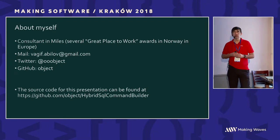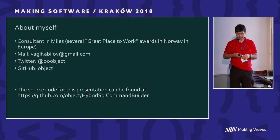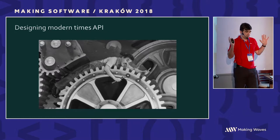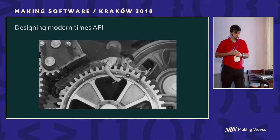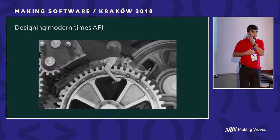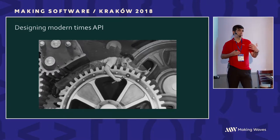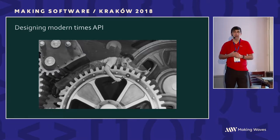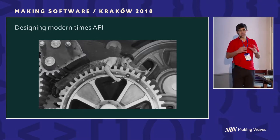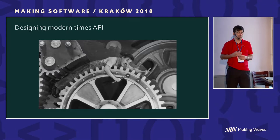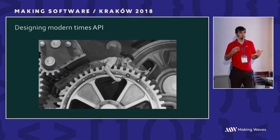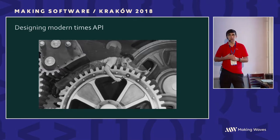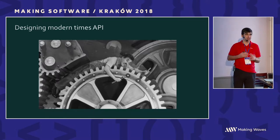But today's talk will be about different things. It will be about designing modern APIs — and of course we need to limit the scope of our definition of API, because very often nowadays when people talk about API they mean web API, like a REST API. That's not what we'll be talking about. It's an API which you make on top of your library — a C-Sharp class library.